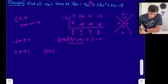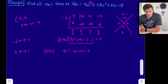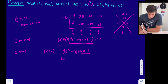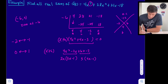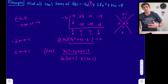I'm going to rewrite the trinomial as 4x squared minus 2x plus 6x minus 3, and factor by grouping. Grouping the first two and last two terms: factoring out 2x from the first group gives 2x minus 1. We want the second group to also produce 2x minus 1, so we factor out 3, giving us 3 times the quantity 2x minus 1.